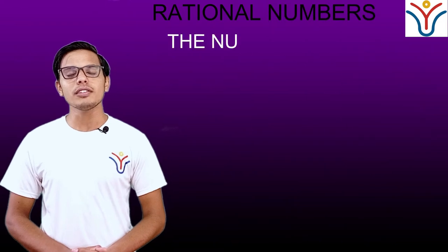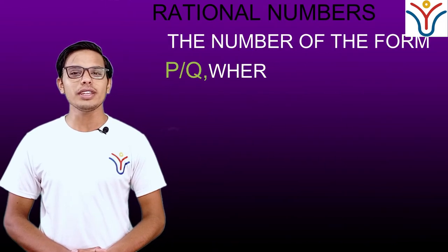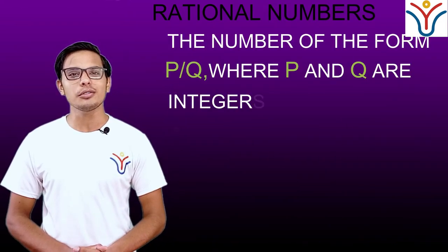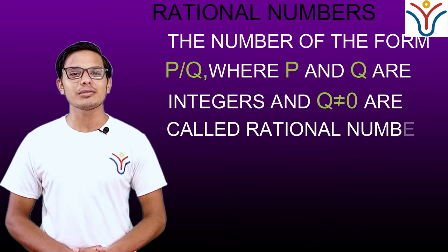Rational numbers: The numbers of the form P upon Q where P and Q are integers and Q does not equal 0 are called rational numbers.